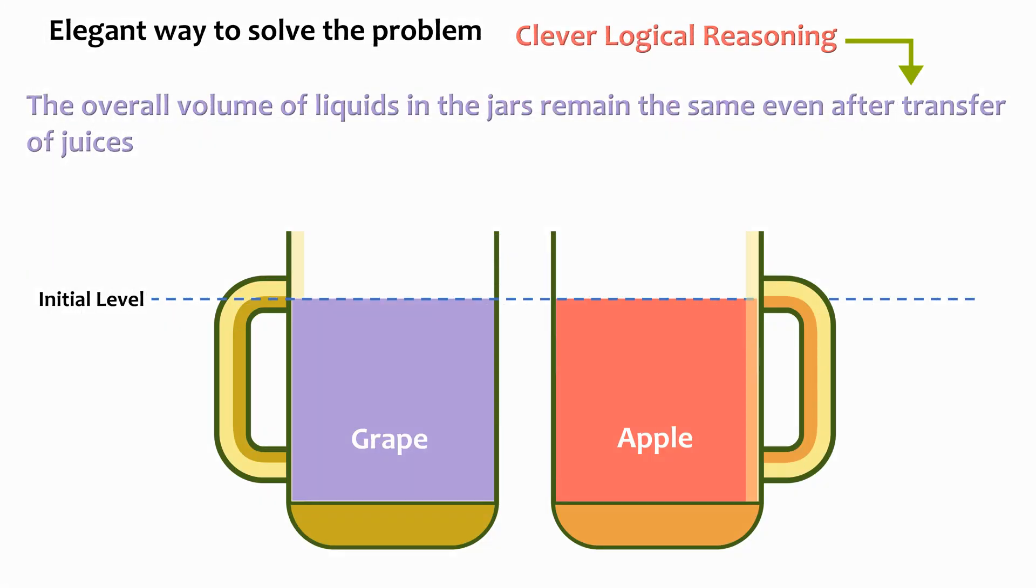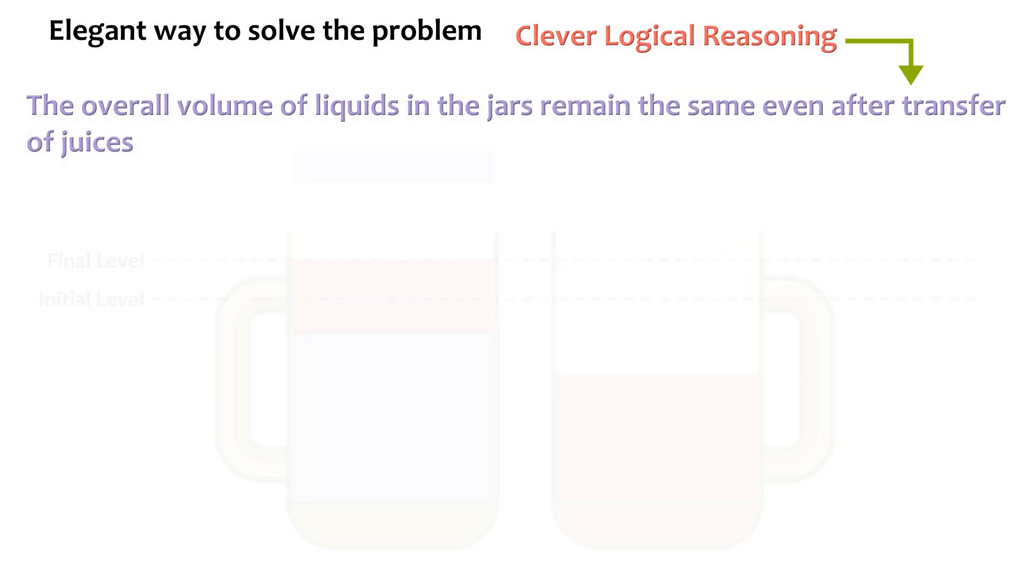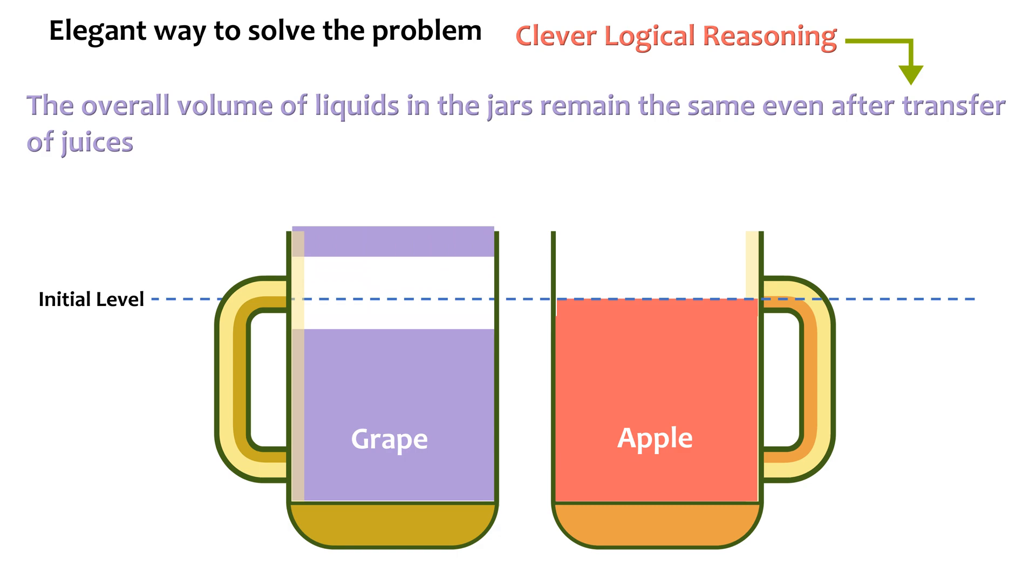For ease of visualization, let's see it this way. If the amount of apple juice we have added in grape juice jar was more than the grape juice extracted, the volume of liquid would increase as compared to the initial volume of the liquid in it. On the other hand, if the amount of apple juice that we have added in grape juice jar is less than the grape juice extracted, the volume of the liquid would decrease as compared to the initial volume of the liquid in it. But, since the volume is constant, the apple juice that we added in the grape juice jar must be equal to the grape juice that we have extracted.